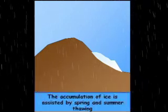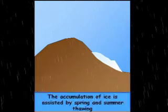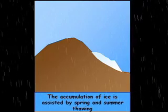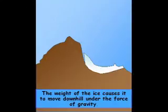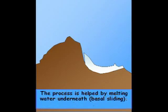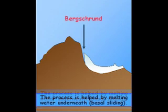The accumulation of ice is assisted by spring and summer thawing. Eventually, the weight of the ice causes it to move downhill under the force of gravity. This is helped by melting water underneath the glacier, often referred to as basal sliding.